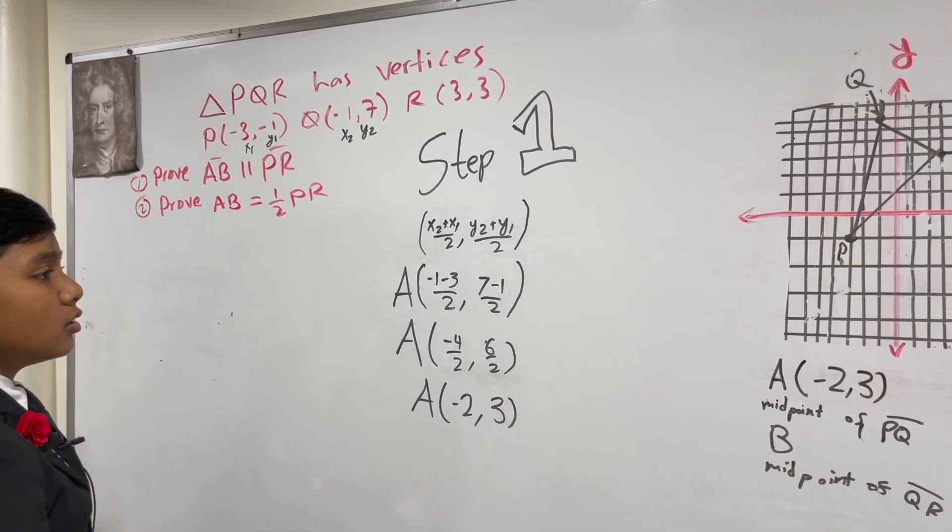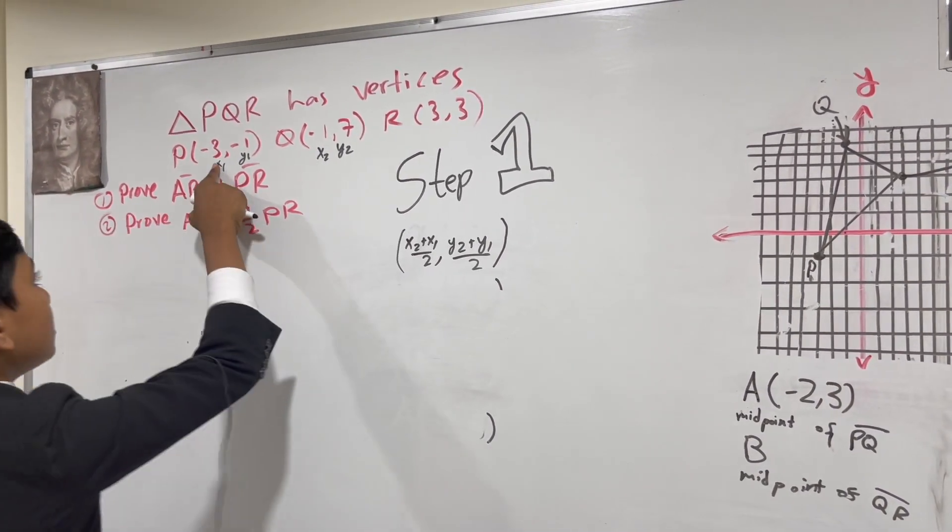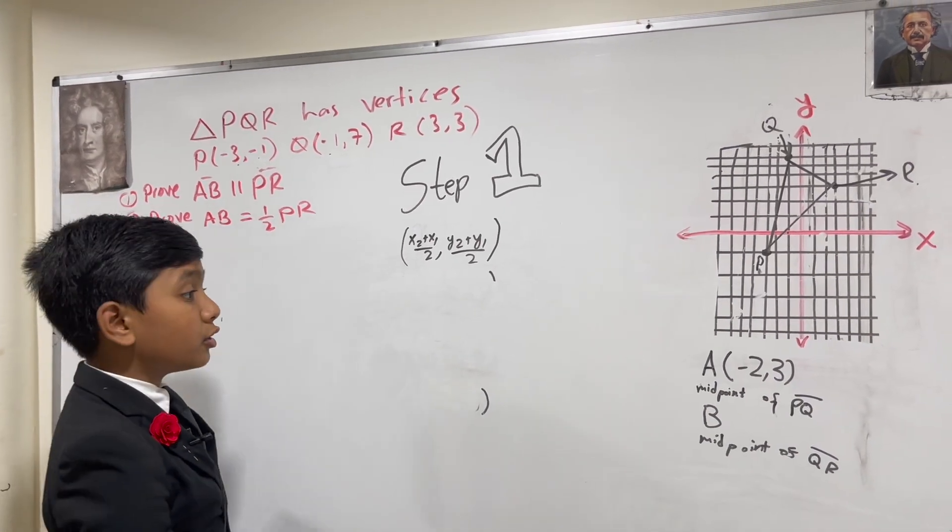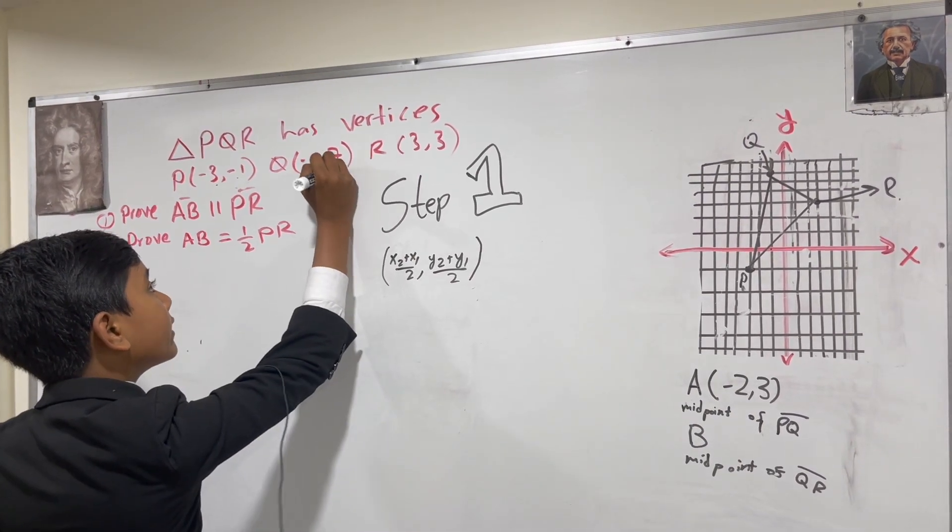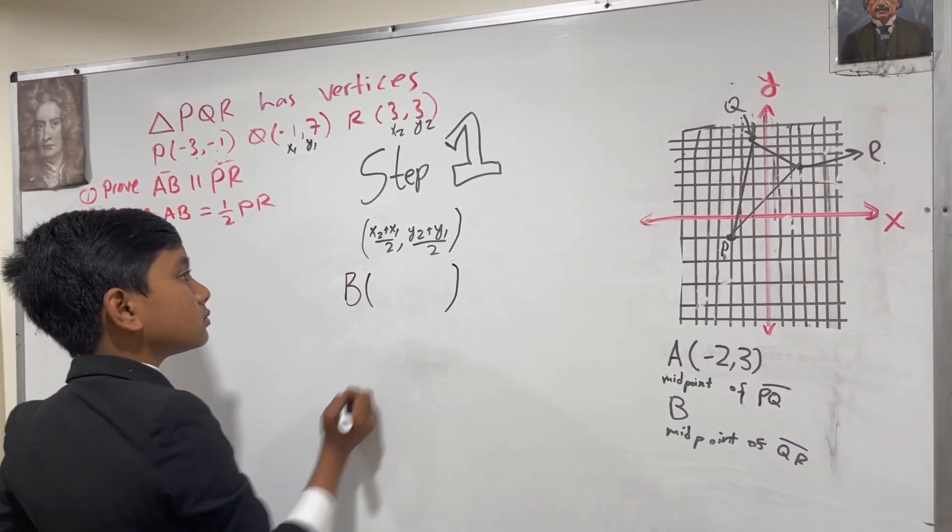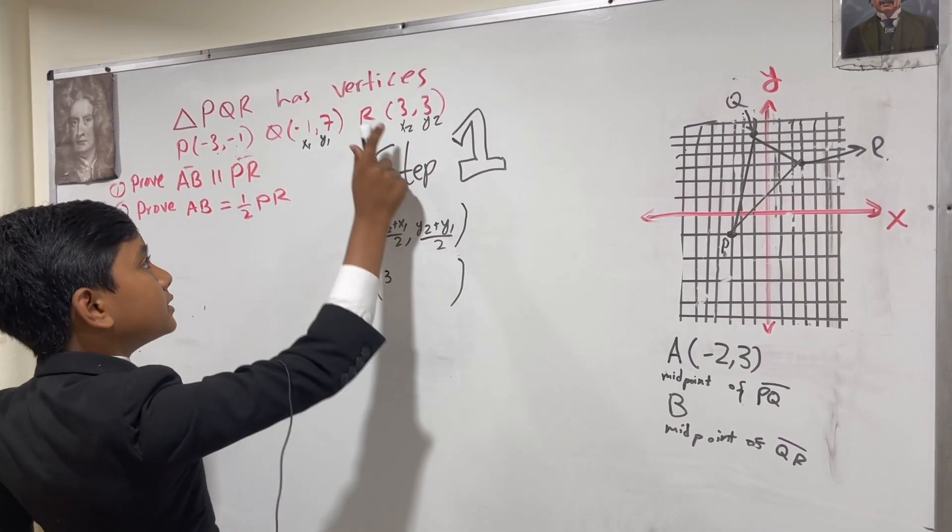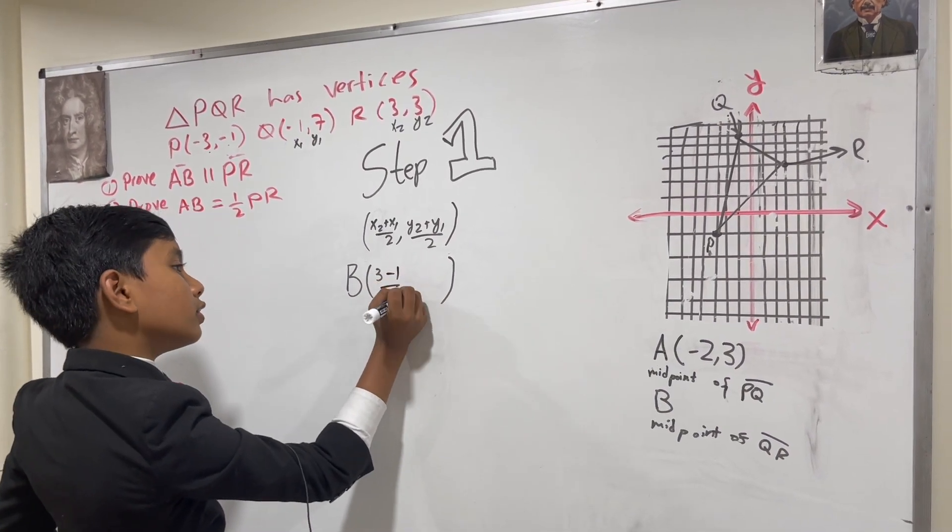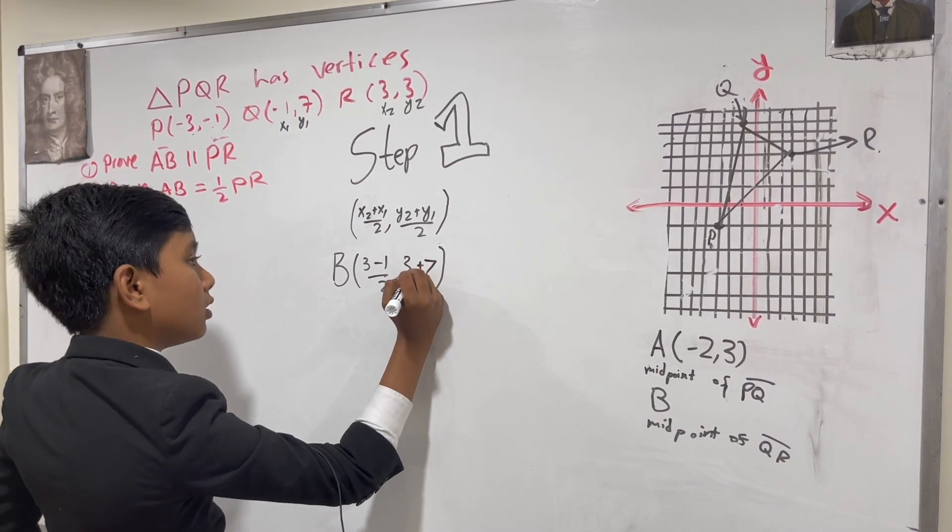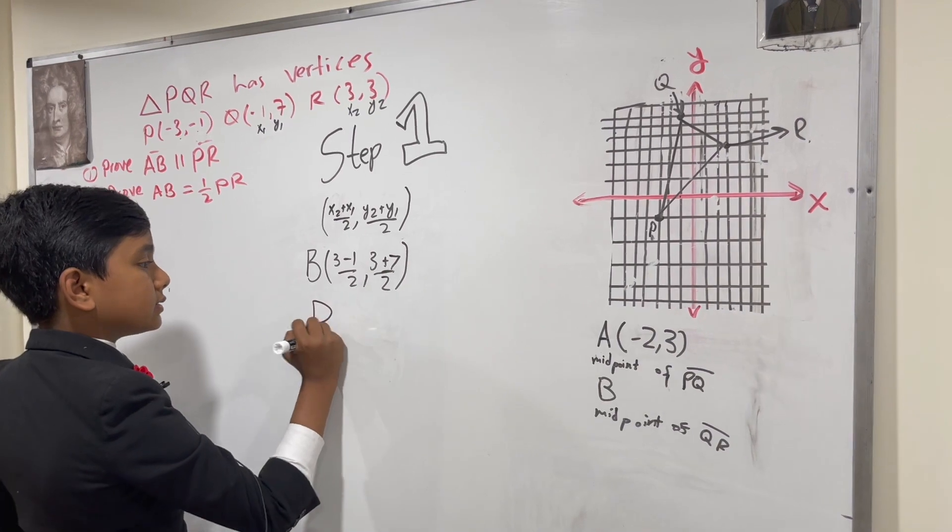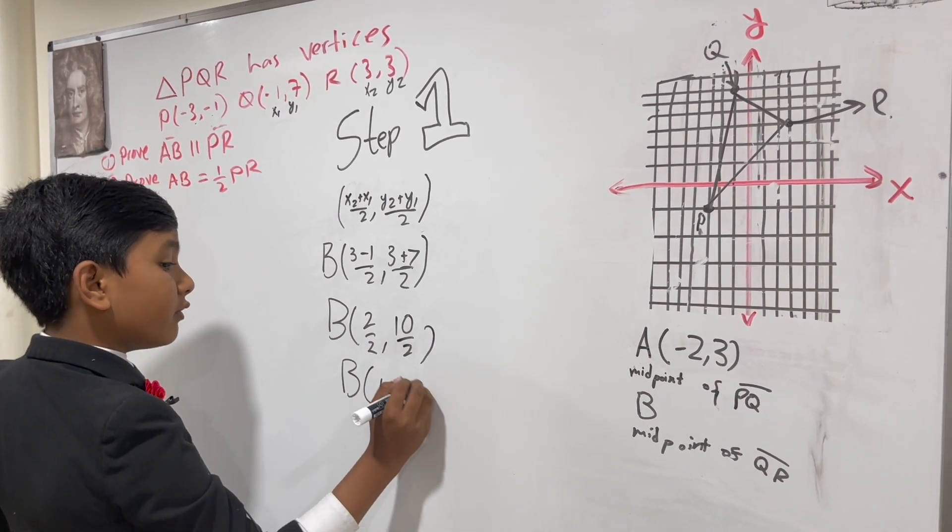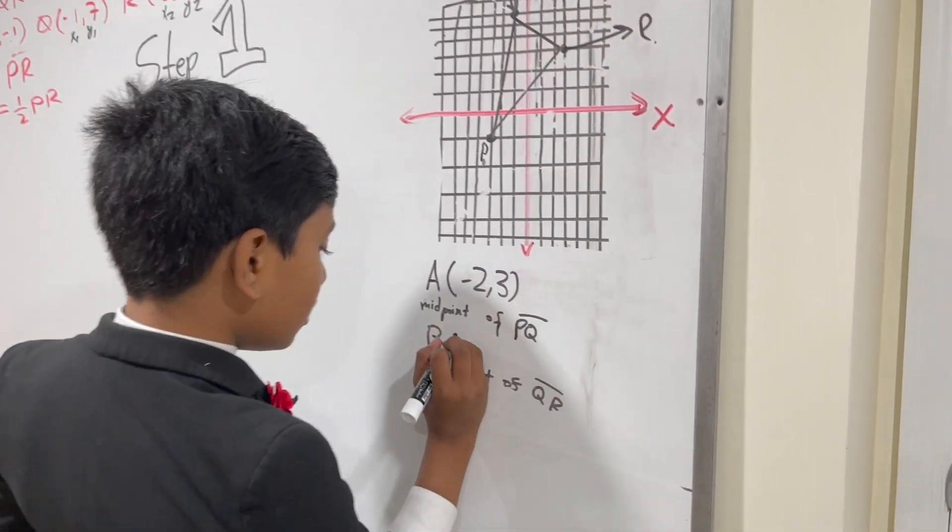What about B? Well, we're going to use the same formula, except we're going to use it for Q and R. Since R has the higher X value, once again, we're going to determine it's coordinate 2. B is going to be 3, which is X2, minus 1, which is X1, over 2 comma. Y2 is 3 and Y1 is 7. That's going to give us 2 over 2 and 10 over 2, which gives us 1 comma 5.